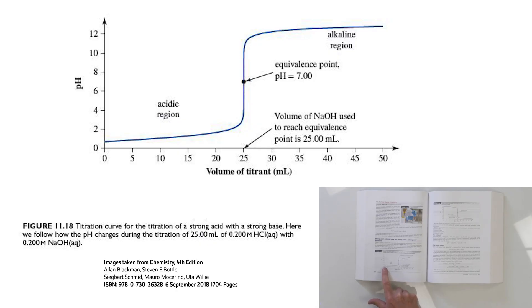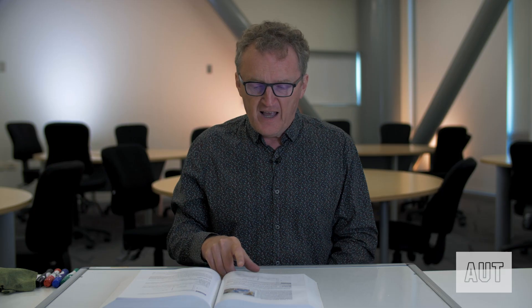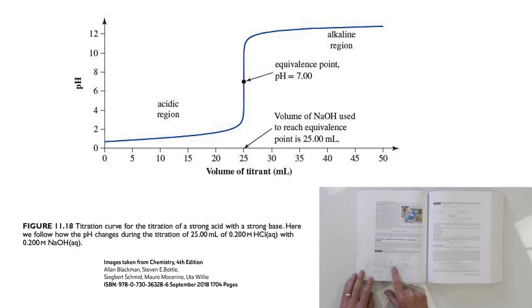We would start off at a pH of around about 0.7, because we're using 0.2 molar HCl — the pH of a 0.2 molar HCl solution is around about 0.7. We're going to start adding sodium hydroxide: open the tap on the burette, swirl, and monitor your pH. You'll see that the pH is not changing very much along here at all.